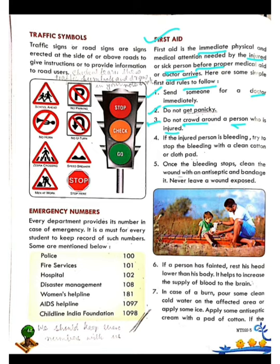Fourth point: if the injured person is bleeding, try to stop the bleeding with a clean cotton or cloth pad — stop the bleeding on priority. Fifth point: once the bleeding stops, clean the wound with an antiseptic and bandage it. Never leave a wound exposed.